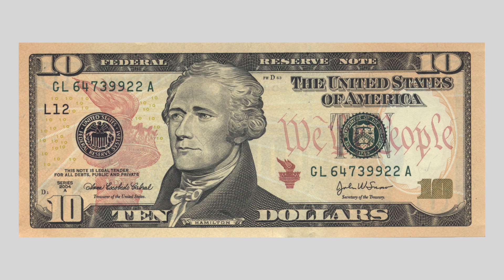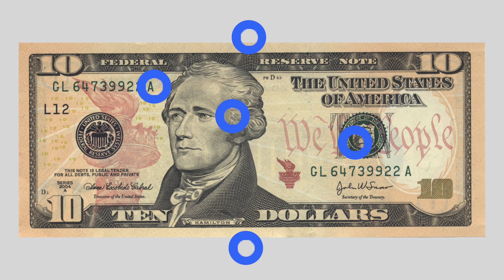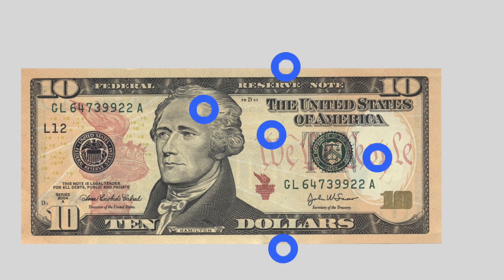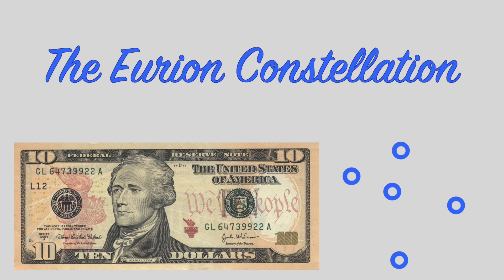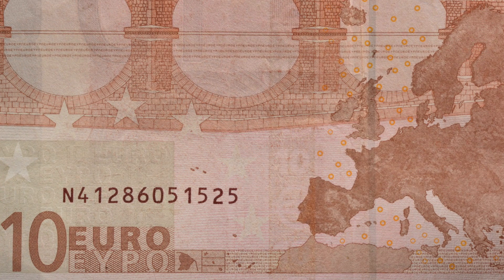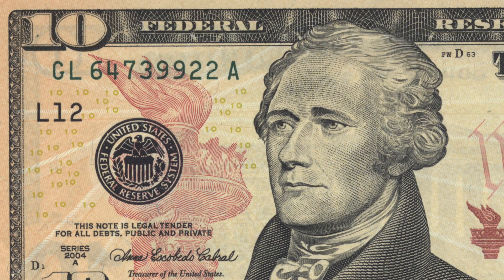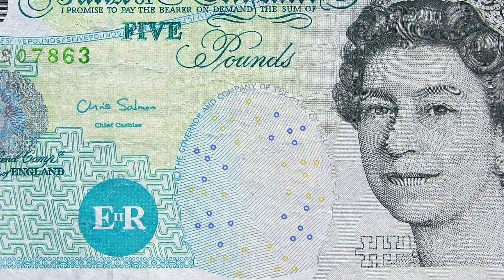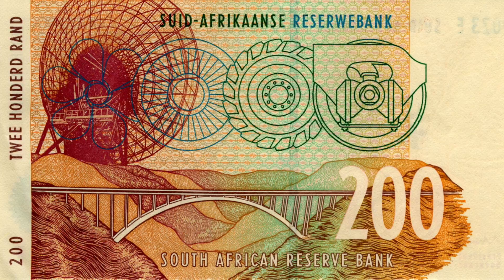It's pretty interesting how money is detected by photocopiers. For almost any major currency, there's one symbol that tells machines that what they're seeing is money. It's called the Orion constellation, and it looks like this. It was first discovered on the 10 euro note in this cluster of circles, but has since been found on the American dollar, the Swedish krona, the UK pound, and pretty much every other major currency.